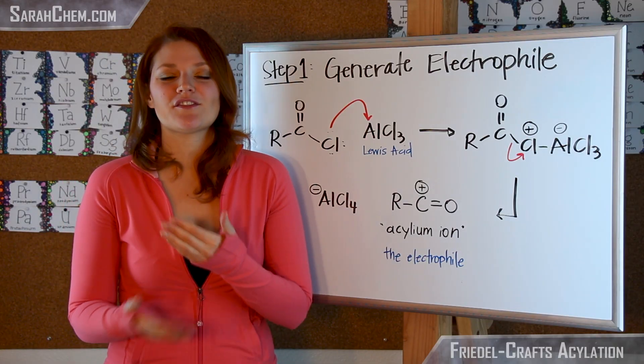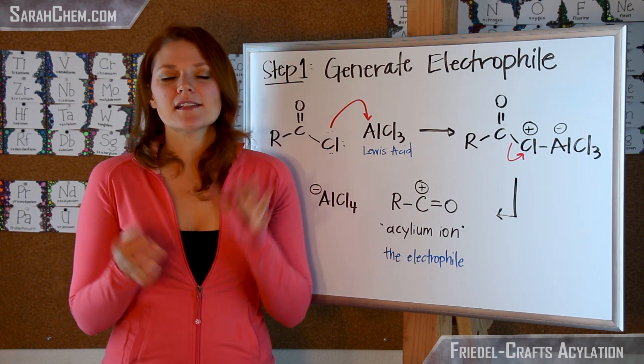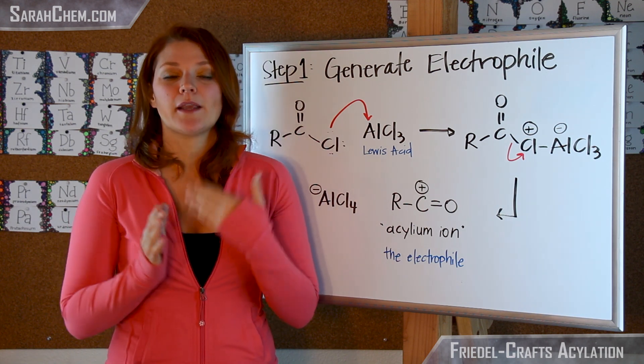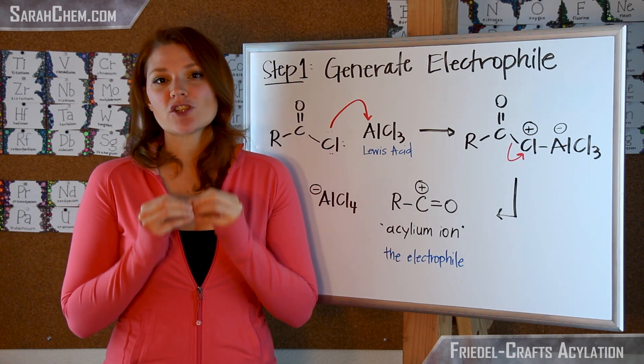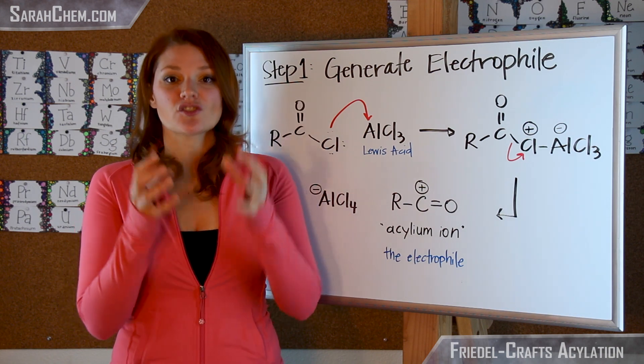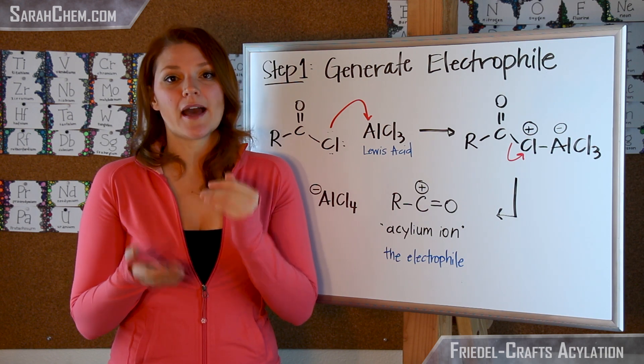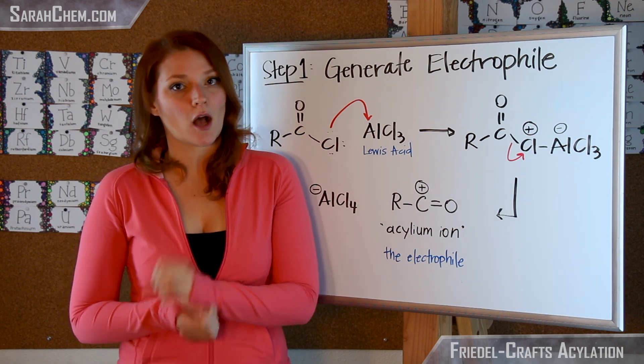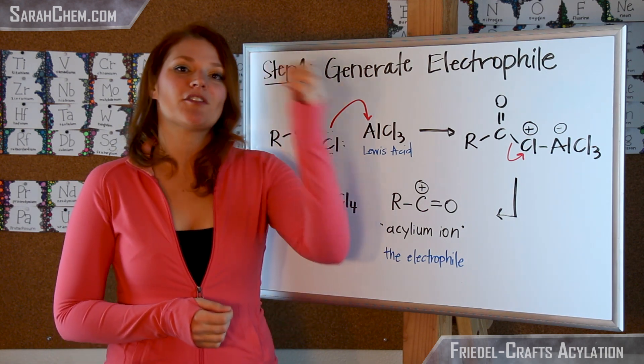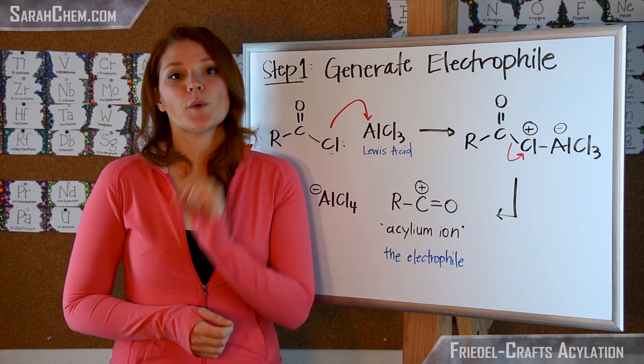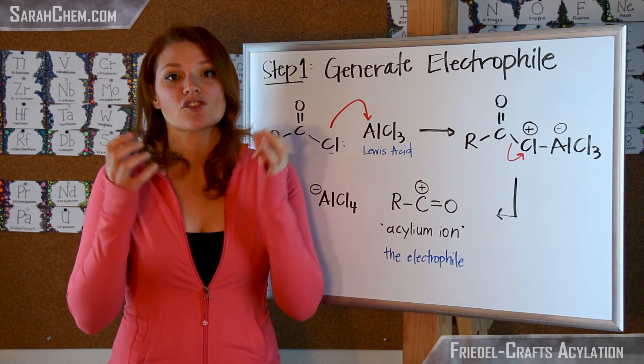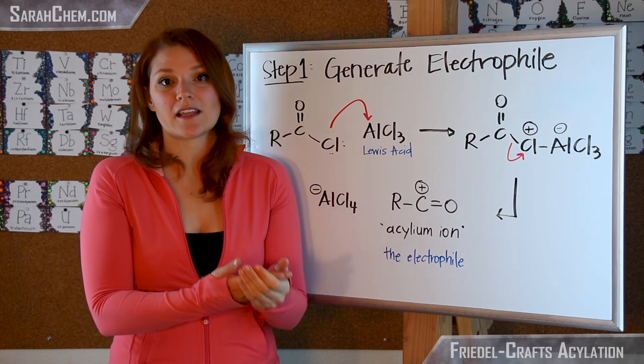So let's go ahead and take a look at the first step. Remember in these electrophilic aromatic substitution-like reactions, what you always have to do is generate an electrophile that is strong enough to motivate the benzene to react. Remember benzene is aromatic, which means it's a particularly stable compound, so it's not necessarily going to be very willing to react. So what you want to do is create an electrophile that is strong enough to get the benzene to engage in the reaction.